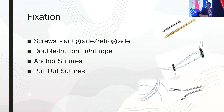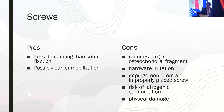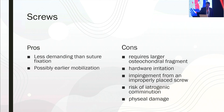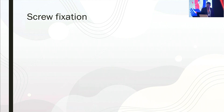For fixation we have different options: screws placed both antegrade and retrograde, double button tight ropes, anchor sutures, and pull-out sutures. Screws are generally less technically demanding than suture fixation, cheaper, and provide possibly earlier mobilization. However, one significant problem seen later is that these screws tend to require removal more frequently.